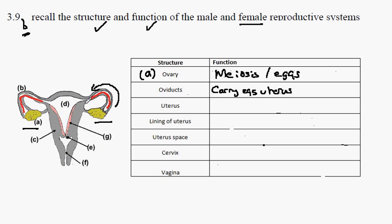The uterus is the structure in the center. Part C is the uterus wall, which is the wall of the uterus — it's made of muscle. This is the part which will stretch to accommodate a pregnancy and would contract during birth.